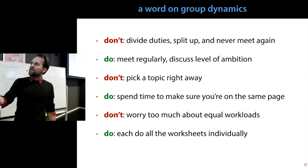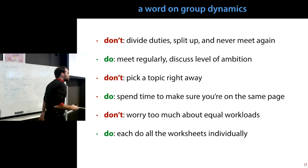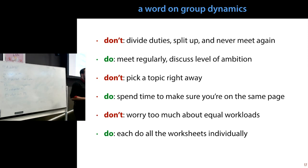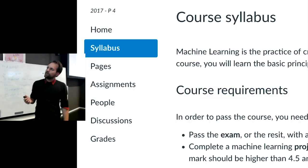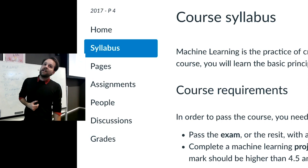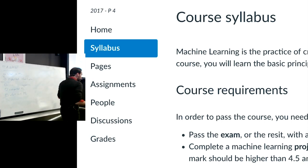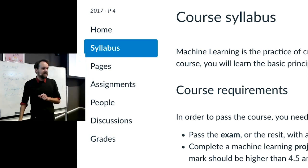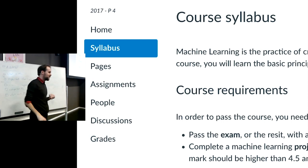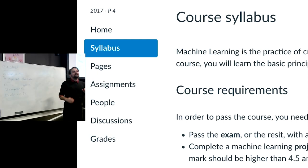I'd recommend that everybody do all the worksheets by themselves so there's a basic level of skill throughout the group. This is the first worksheet — instructions are on Canvas. Finally, you can ask me any question you like, so long as you've read the Canvas page from top to bottom including the FAQ. After you've done that, please feel free to ask whatever you want. You can also ask the TAs.